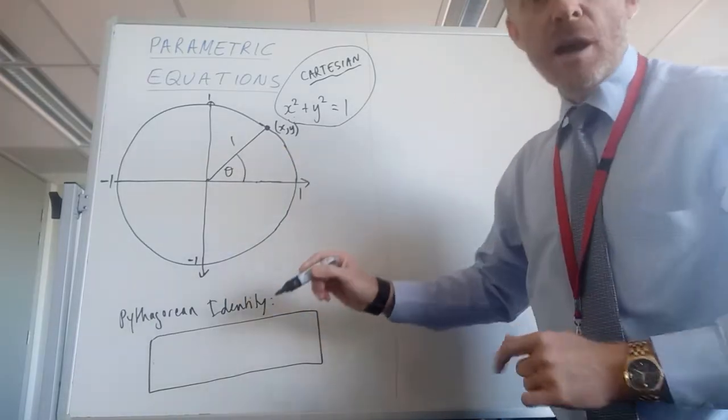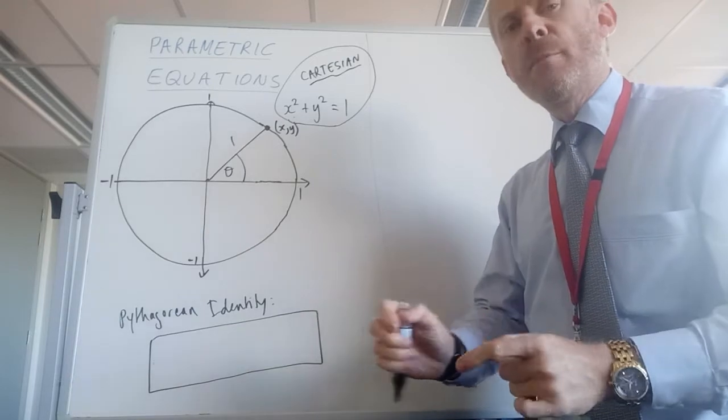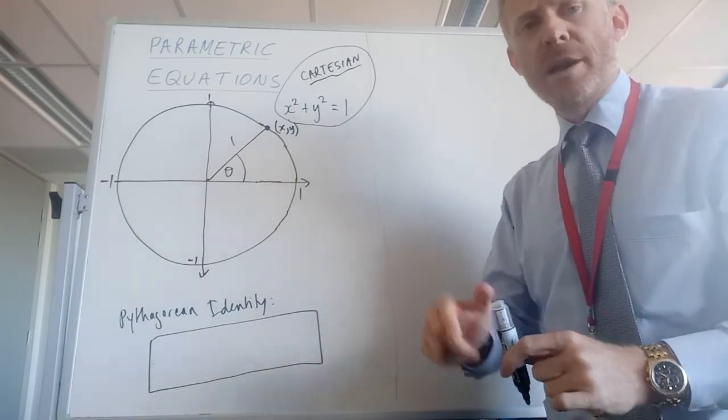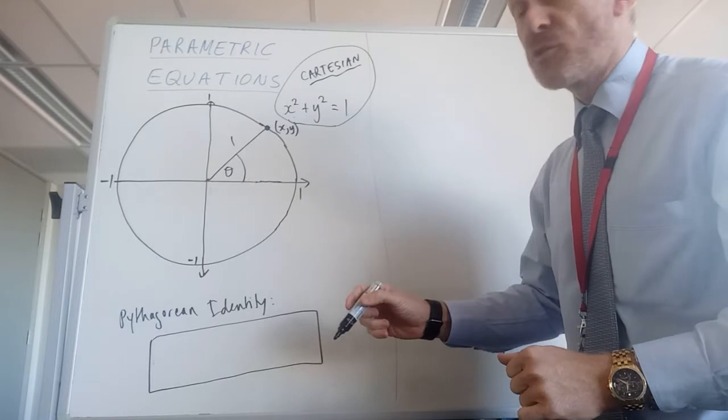And that's going to become the third variable that's going to allow me to make not one, but two equations. Two parametric equations for this same circle.